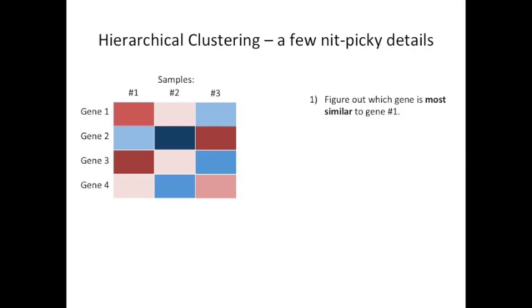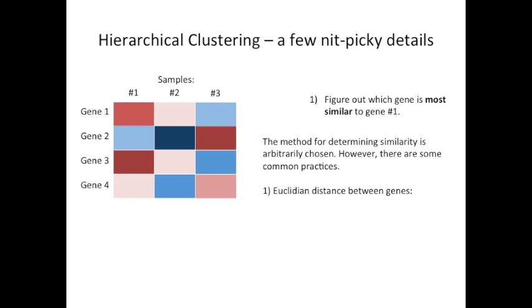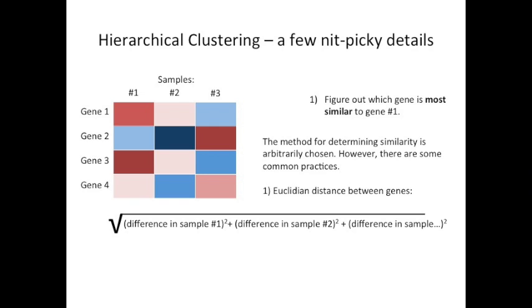Now that we have a conceptual idea of what's going on, let's get down to the nitpicky details. In the first step, we have to figure out which gene is most similar to gene 1. However, before we do that, we have to define what most similar means. Unfortunately, the method for determining similarity is arbitrarily chosen. However, there are some common practices. The first and most common one is the Euclidean distance between genes. Here's the formula for that.